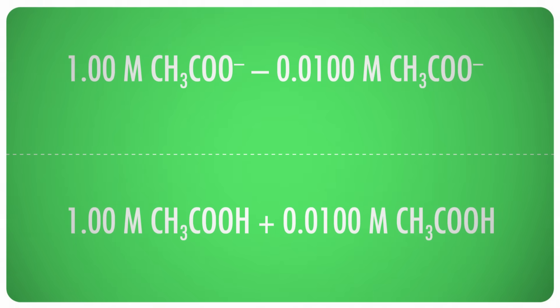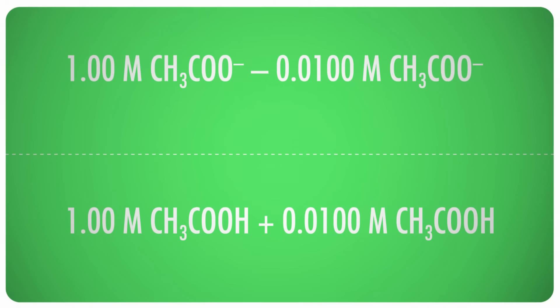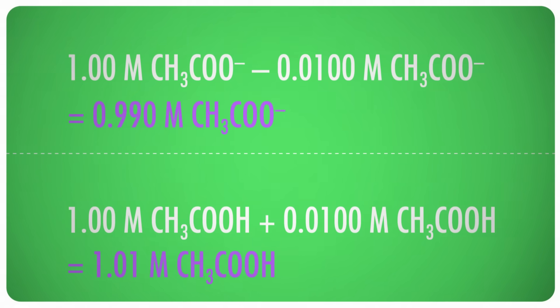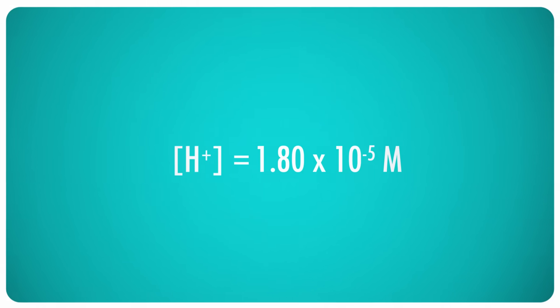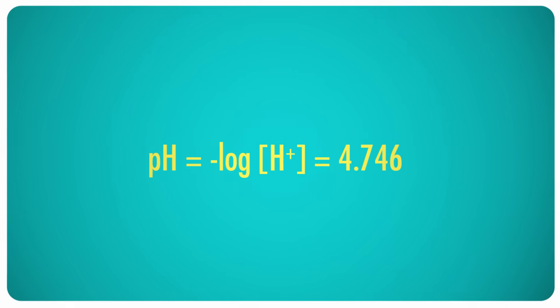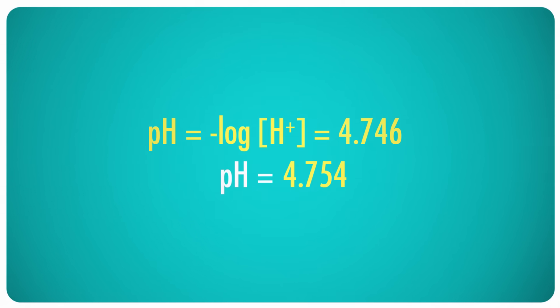To neutralize 0.01 molar HCl — or more specifically, 0.01 molar H⁺ — the acetate concentration must decrease by 0.01 moles per liter, simultaneously increasing the acetic acid concentration by 0.01 moles per liter. That leaves us with 0.99 molar acetate and 1.01 molar acetic acid. pH is determined from the concentration of protons, which is in our equilibrium equation, so let's just solve for that. When you plug in the new acetic acid and acetate concentrations and the Ka, you get 1.80 times 10 to the negative 5 moles per liter for the proton concentration, which translates to a pH of 4.746.